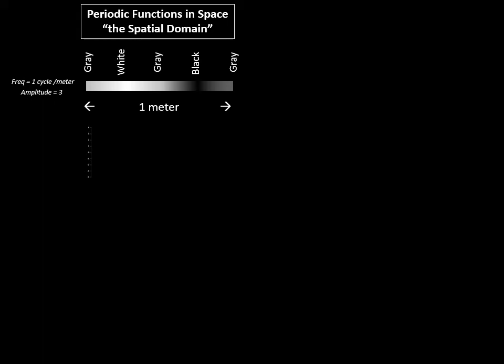And if we assigned numbers to the grayscale where gray is zero and white is three, we would say that the white part of this line has an amplitude of three above the baseline grayscale.